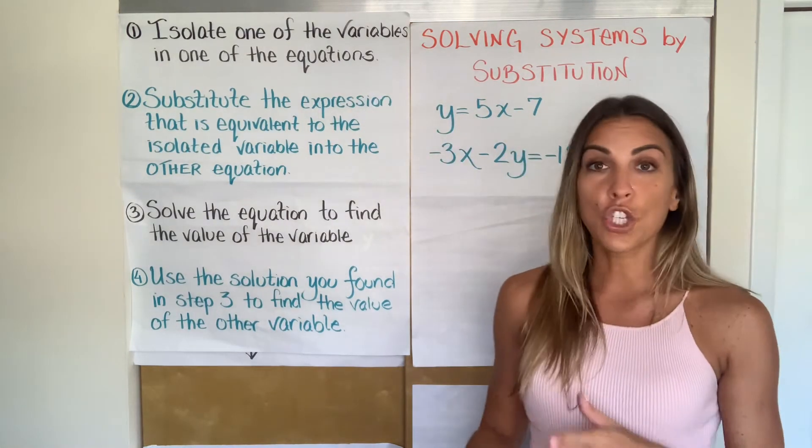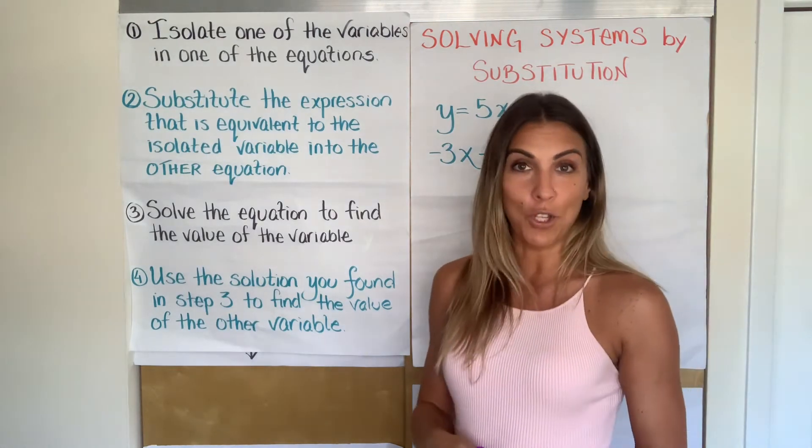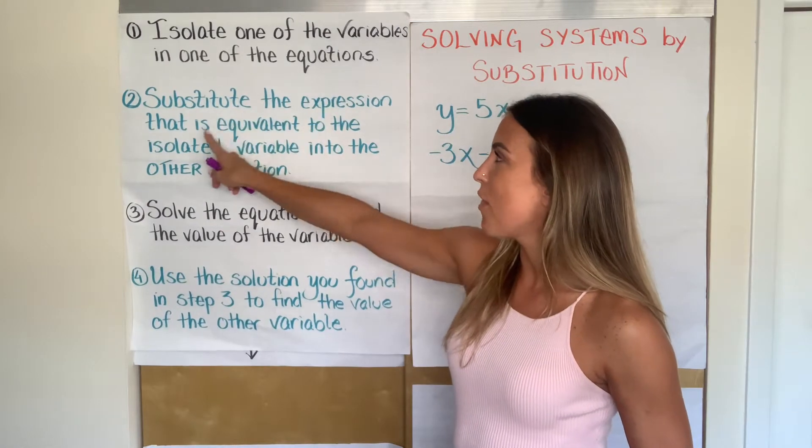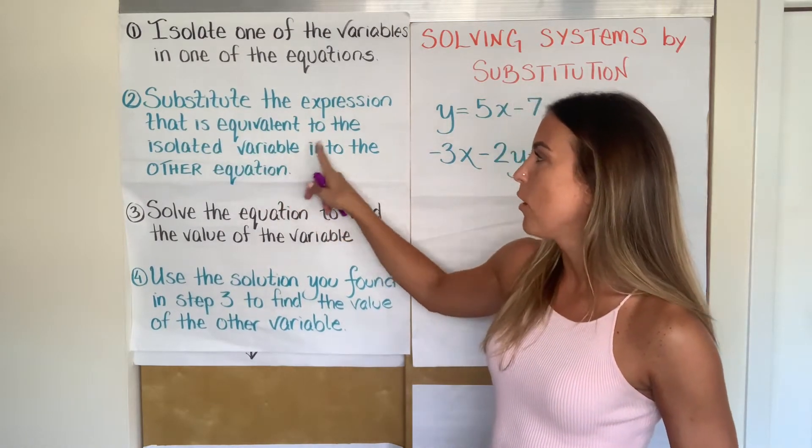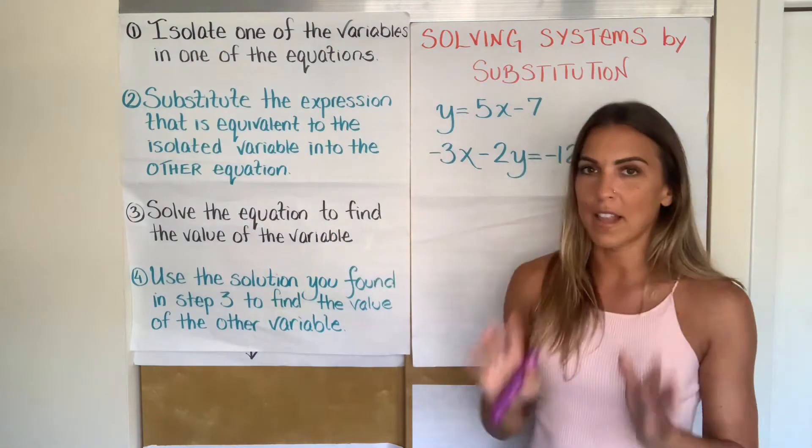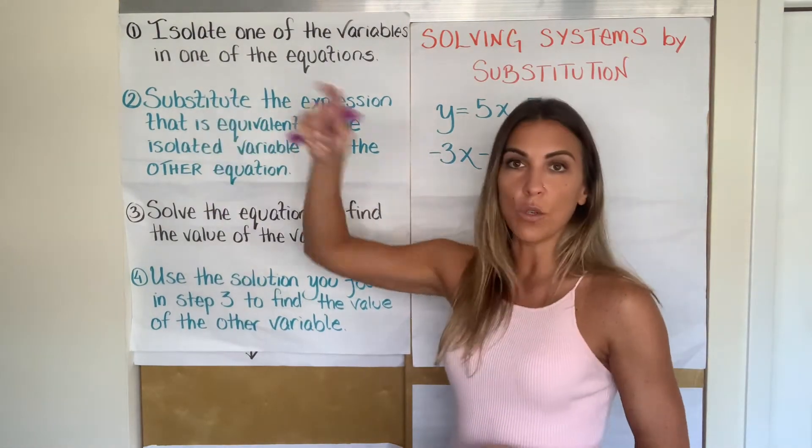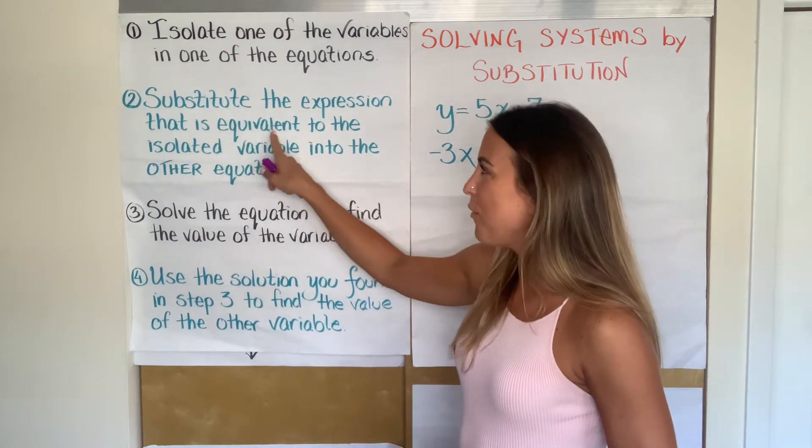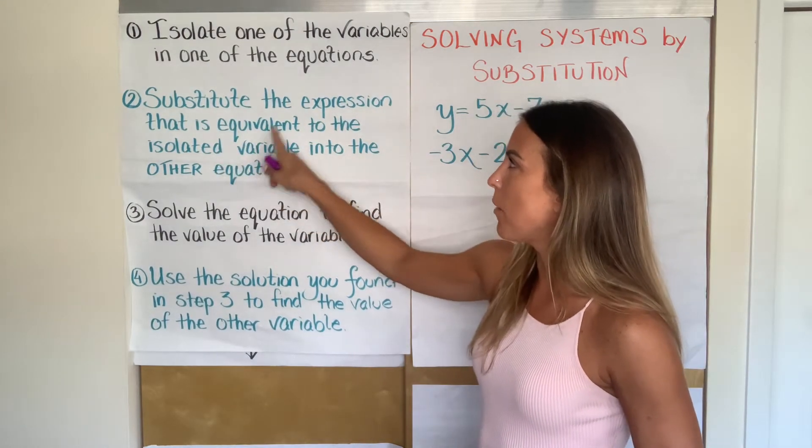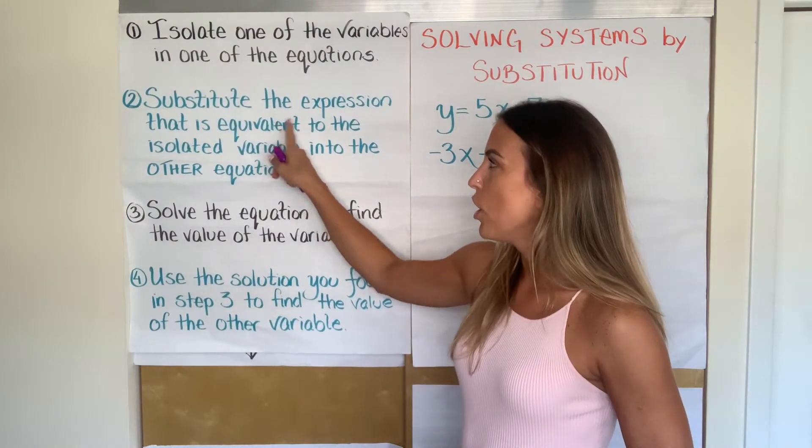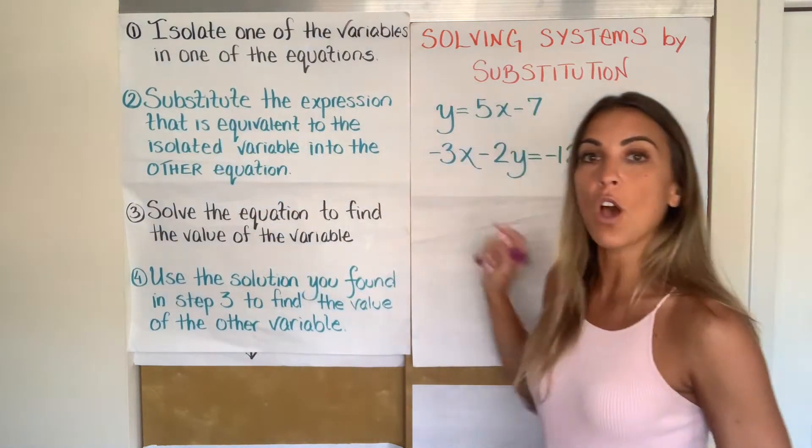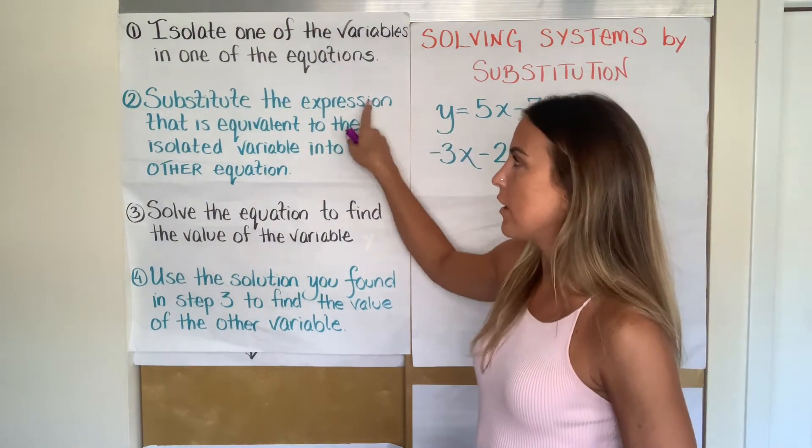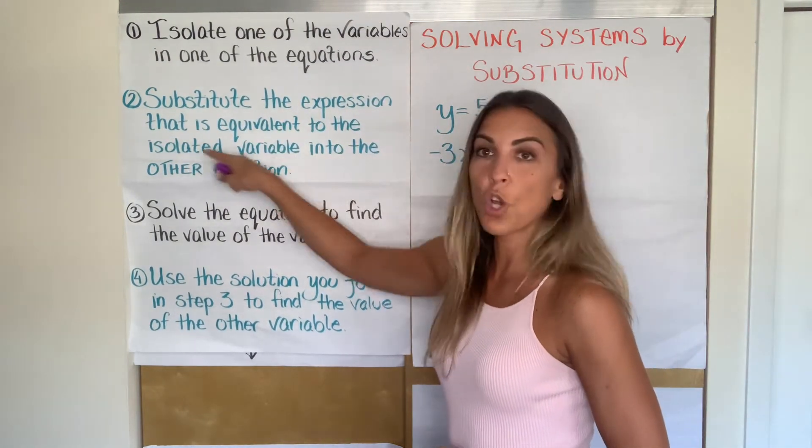Let's move to two. Two is very wordy. Stick with me. You're smart. I'll break it down. You will understand it. Ready? Substitute the expression that is equivalent to the isolated variable into the other equation. Let's see what this means. Substitute means to replace something. The expression that is equivalent to the isolated variable. I'm looking for an expression that is equal to the isolated variable. Well, what's our isolated variable? It was Y.